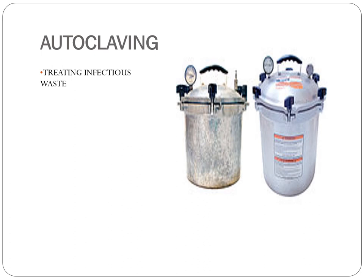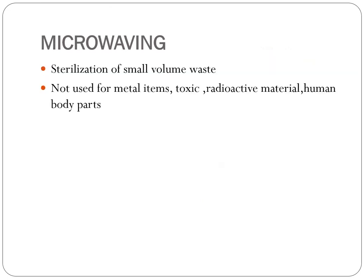Next type is autoclaving — treating infectious waste by autoclaving method for sterilizing them. Last type of waste treatment is microwaving — sterilization of small volumes of waste is done; it is not used for metal items that are toxic, radioactive materials, or human body parts. These are the different waste treatment methods usually done.